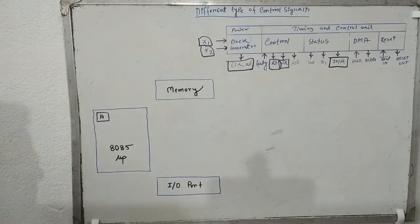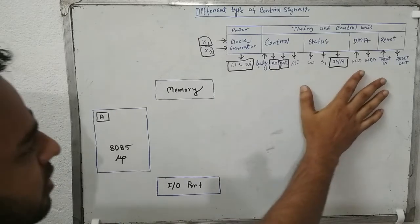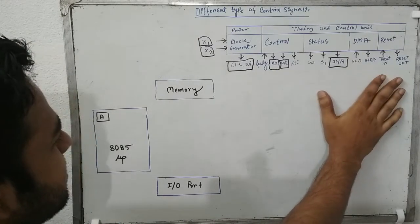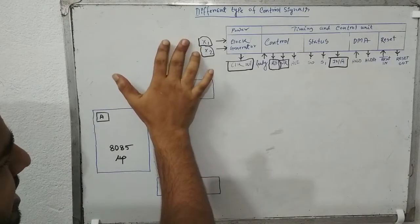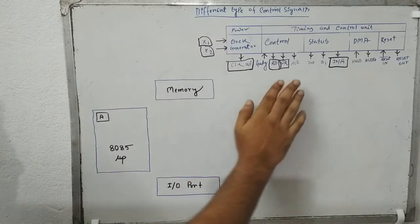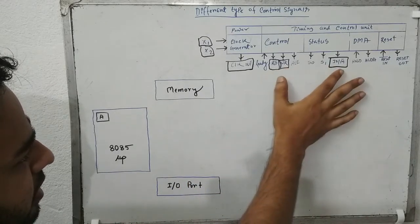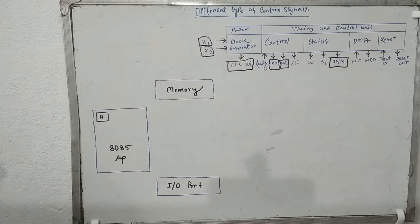Hi everyone, today I am going to talk about the control signals which remain to be explained: hold, hold acknowledgement, reset in, and reset out. In our previous class we discussed some control pins and related signals like x1, x2, read/write, and input/output memory, and we also generated some different control signals by combining these three control signals.